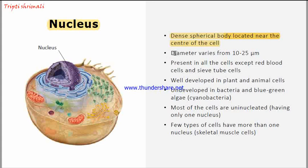Its diameter varies from 10 to 25 micrometers. It is present in all cells except RBCs and the sieve tubes. Mature RBCs do not have a nucleus and the sieve tubes also lack the nucleus.